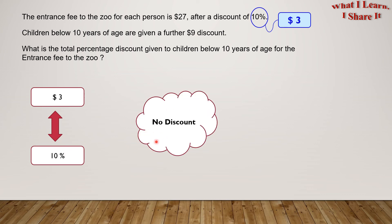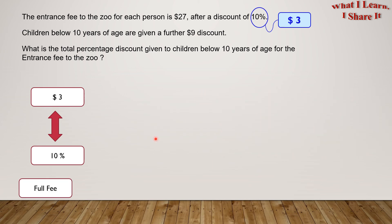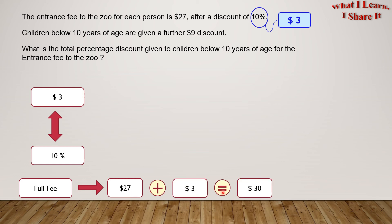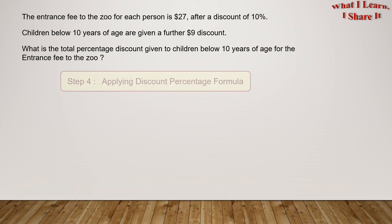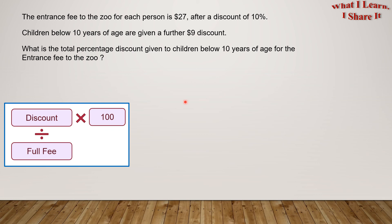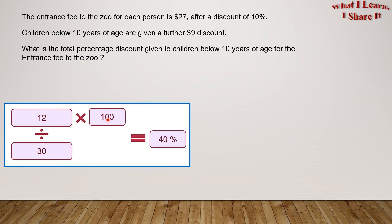But what if there was no discount? People would have to give the full fee. So the full fee would be $27 plus $3, which equals $30. The full entrance fee without any discount is $30. Now we can apply the discount percentage formula. The discount here is $12 and the full fee is $30. So 12 divided by 30 times 100 equals 40%.